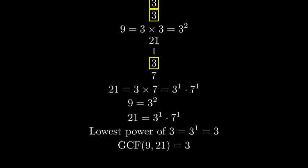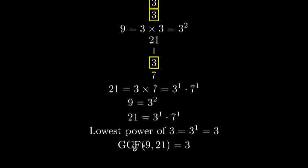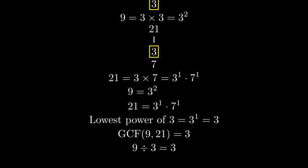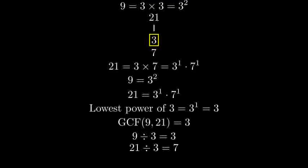Therefore, the greatest common factor of 9 and 21 is 3. We can verify this is correct, because 3 divides evenly into both 9 and 21. 9 divided by 3 is 3, and 21 divided by 3 is 7. And that's how we find the greatest common factor of 9 and 21 using prime factorization.